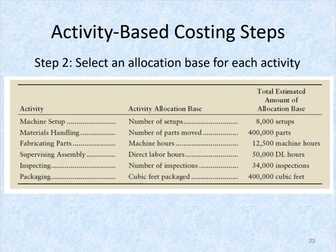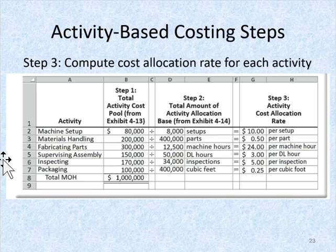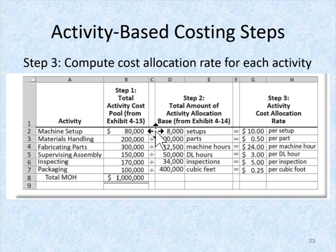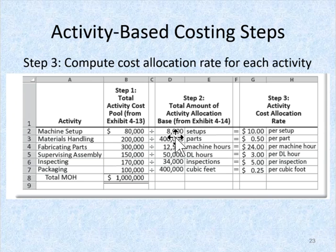We take those activities and the costs associated with them and divide by the allocation base. For example, machine setup was $80,000 divided by 8,000 setups done during that period, which equals $10 per setup. We do that for each and every activity to get an activity rate, or cost allocation rate.